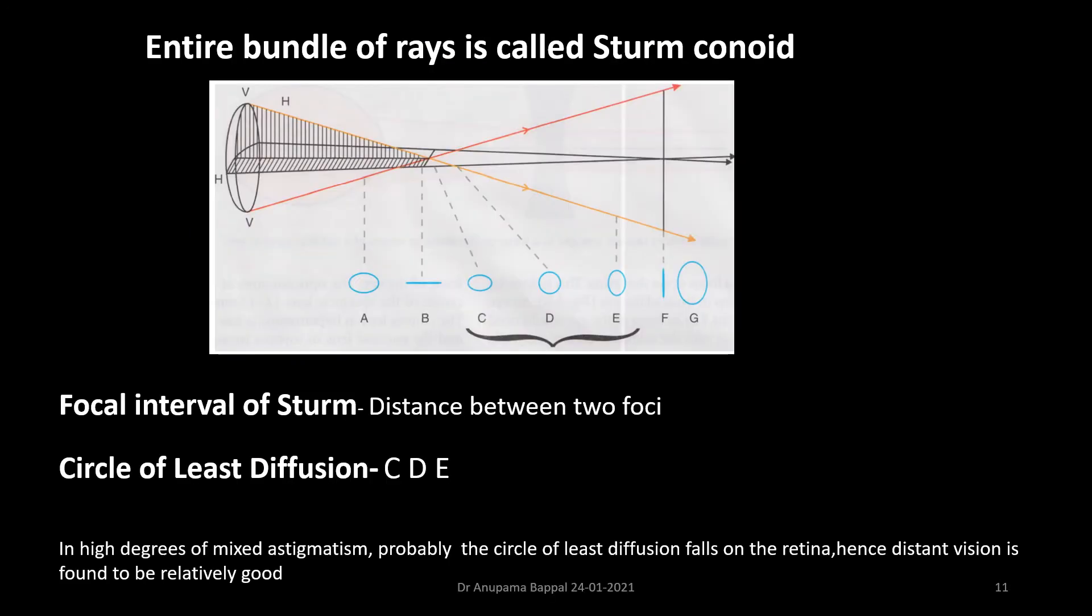So entire bundle of rays is called as the Sturm's conoid, and the distance between two foci is called as focal interval of Sturm. And C, D, and E is the circle of least diffusion. That means if this image falls on the retina, the patient is able to see relatively well. So in high degrees of mixed astigmatism, the circle of least confusion falls on the retina, hence the distant vision is found to be relatively good.